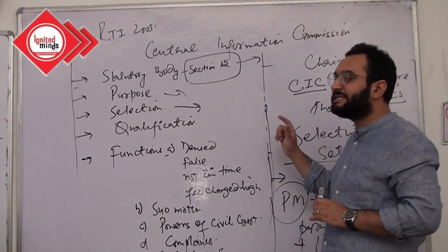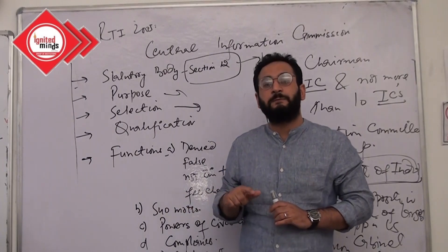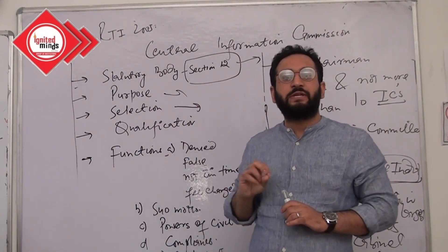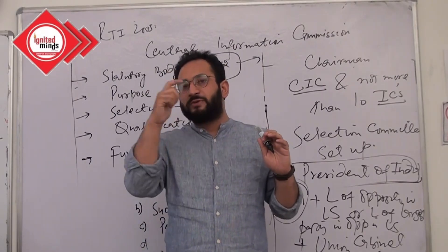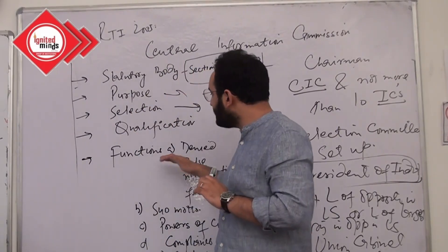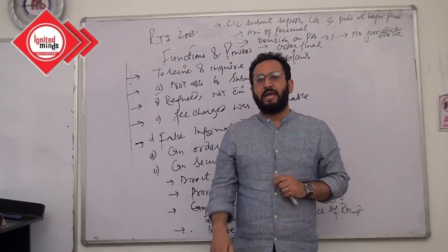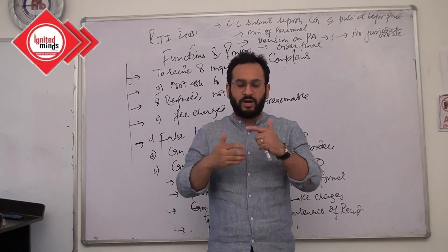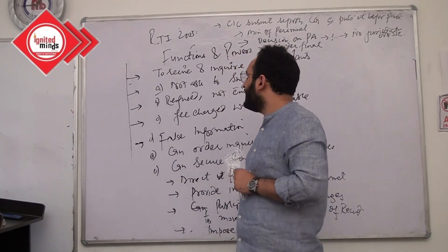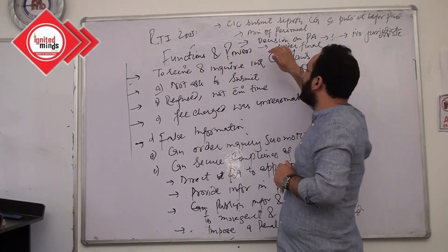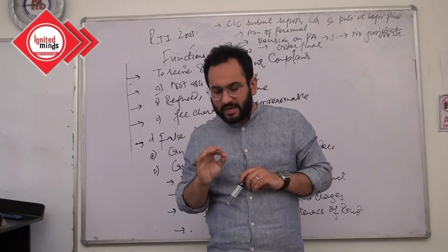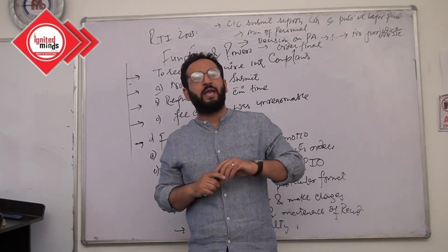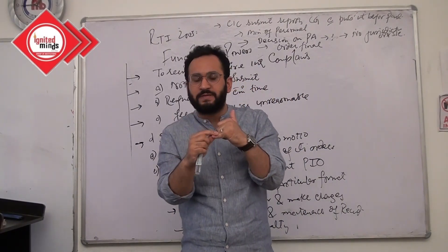Next we were supposed to deal with tenure, service conditions, and powers, but we are not going there because those are being amended in RTI 2019 — we shall deal with those in detail separately. We are done with the structure of the CIC and how CIC and IC members are selected and what the qualification criteria is. RTI makes it clear that the CIC's work is to oversee the working of RTI at the central level — complaints only for central departments, central public sector undertakings, financial institutions, banks, non-banking financial companies under the central government, and union territories.